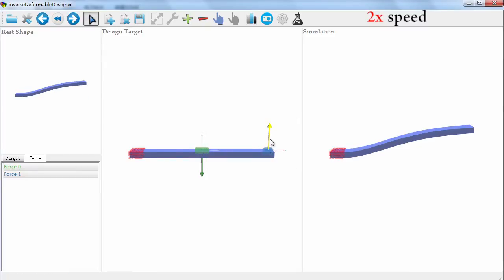After finding the rest shape, the user can interactively adjust the external forces to explore nearby solutions.